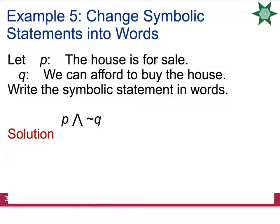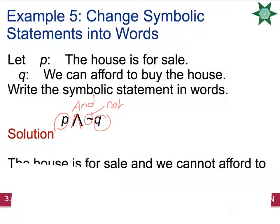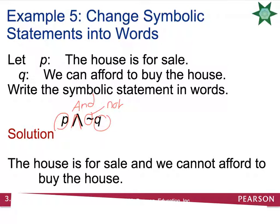With P = 'the house is for sale' and Q = 'we can afford to buy the house,' let's write the symbolic statement in words. P ∧ ~Q means: 'The house is for sale and we cannot afford to buy the house.'